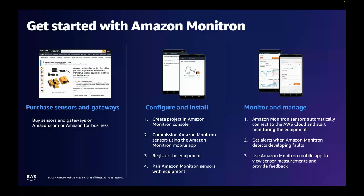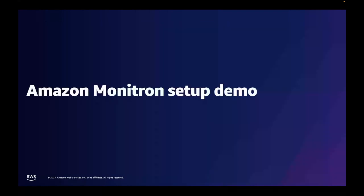Finally, monitor and manage. Once the Monitron sensors and gateways are set up, sensors automatically connect to the AWS cloud via the gateway and Monitron starts monitoring the equipment. Reliability managers and technicians get alerted whenever Monitron detects potential failures. In the Monitron mobile app, technicians can view the sensor measurements and provide feedback on alerts received to help improve system accuracy. Amazon Monitron includes both one-time hardware purchase costs and an ongoing pay-as-you-go service fee per Monitron sensor in use — no additional upfront fees and no long-term commitments. Hardware purchases are made at the advertised list price. Assuming you have ordered the Amazon Monitron kit, I'd like to show you a video created by our product management team narrated by Kartik Dalal, the senior product manager at AWS.